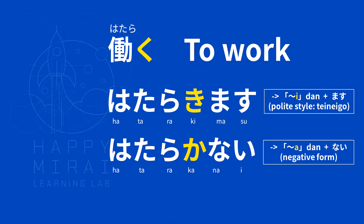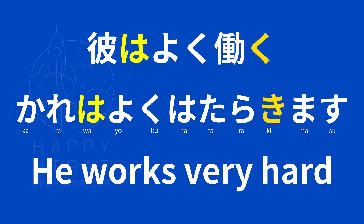Next verb: 働く (hataraku) — to work. 働きます (hatarakimasu). 働かない (hatarakanai). Example: 彼はよく働く (kare wa yoku hataraku) — 彼はよく働きます (kare wa yoku hatarakimasu) — He works very hard.